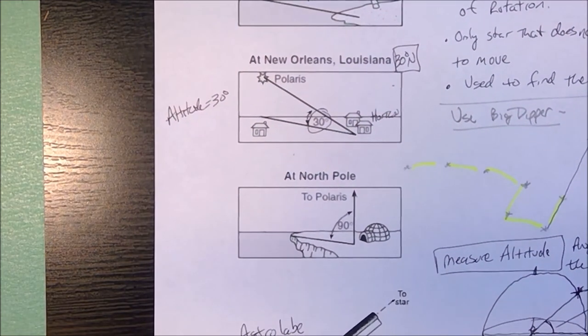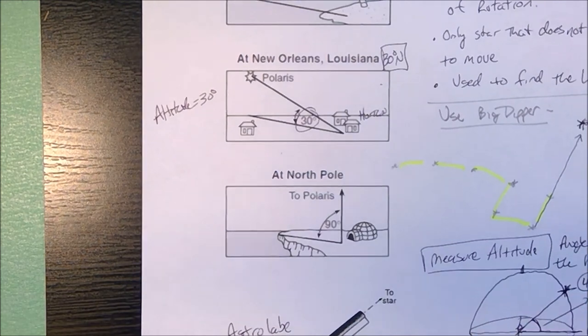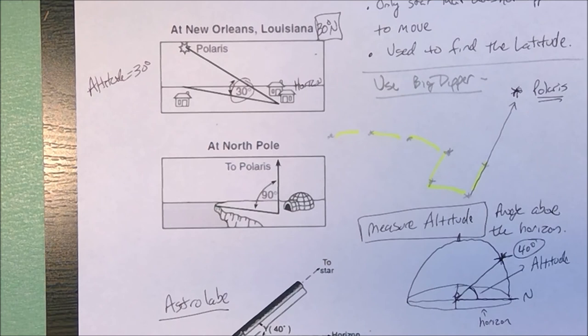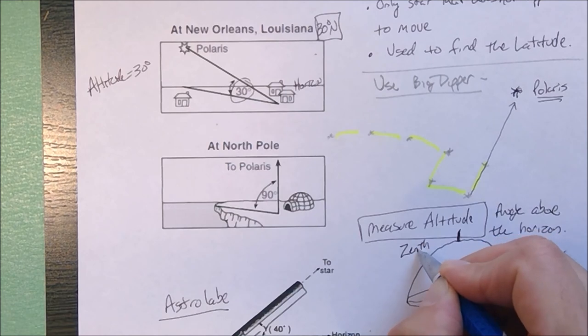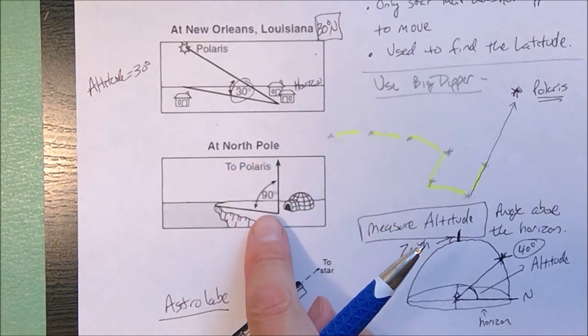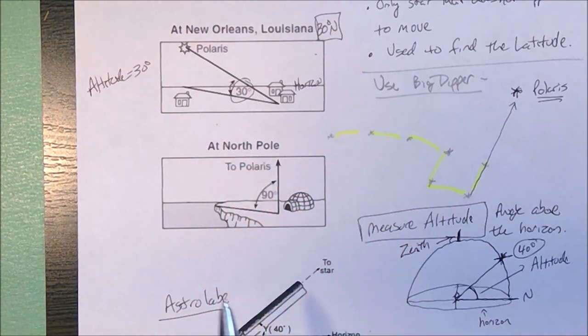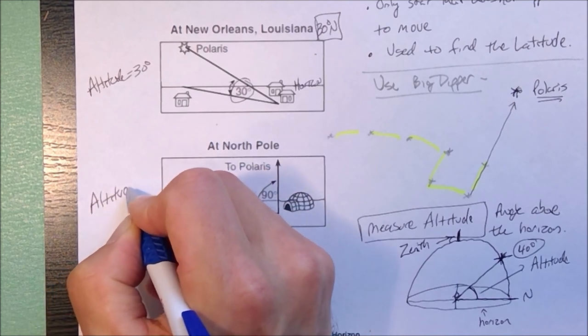Finally, the only place on the planet where you would see Polaris directly above you. Now, on our model over here, you'll notice I put a little mark. The point directly above the observer is referred to as the zenith. So at the North Pole, you would see Polaris at 90 degrees. It would be directly overhead. It would be at your zenith.